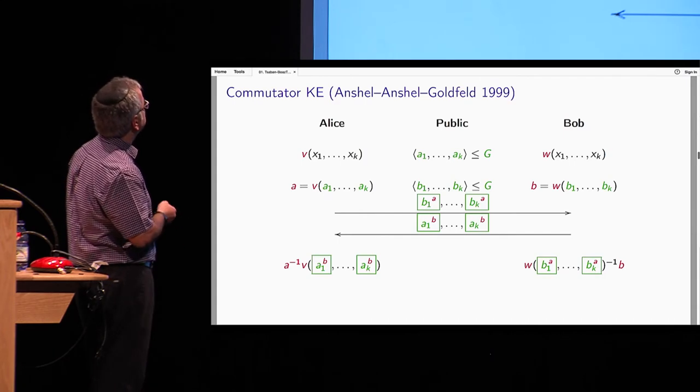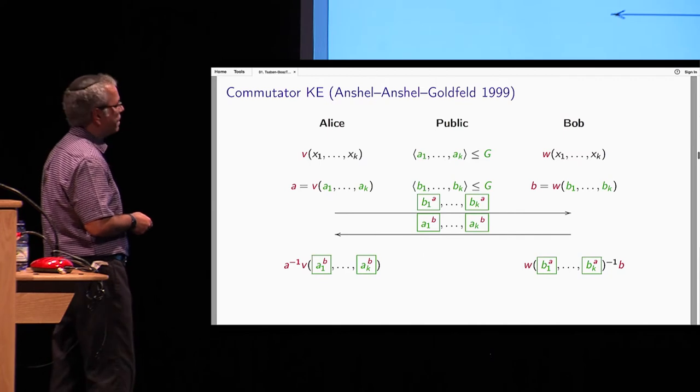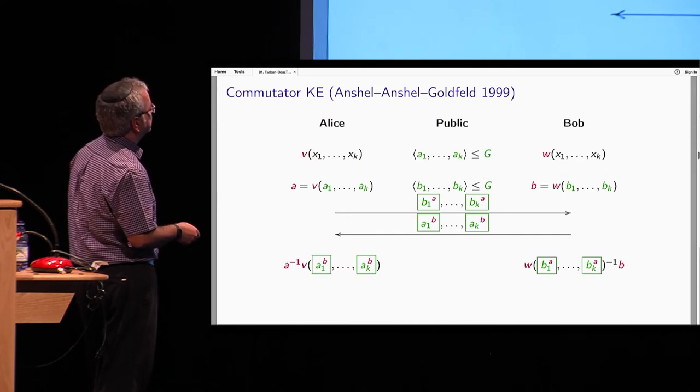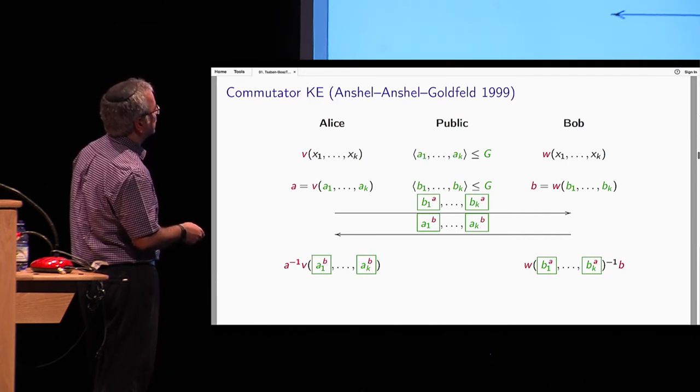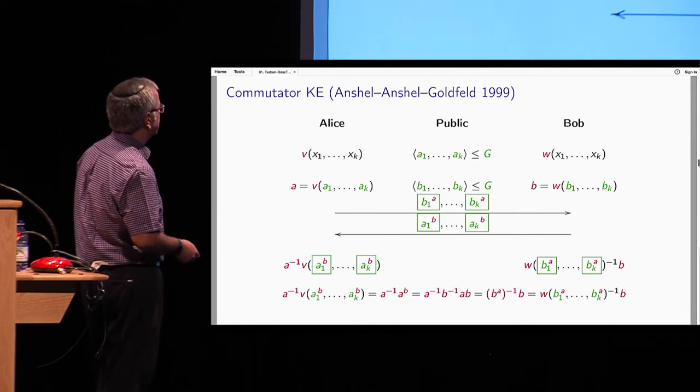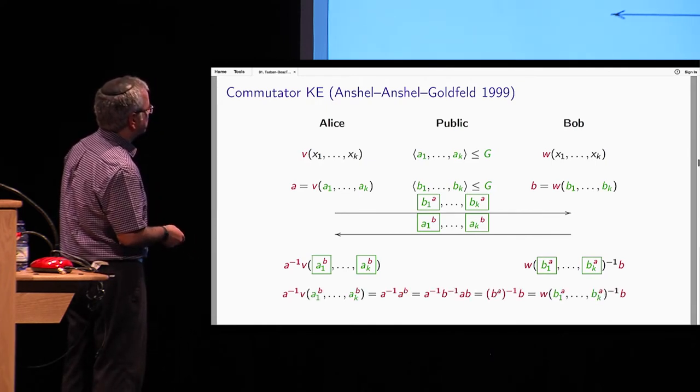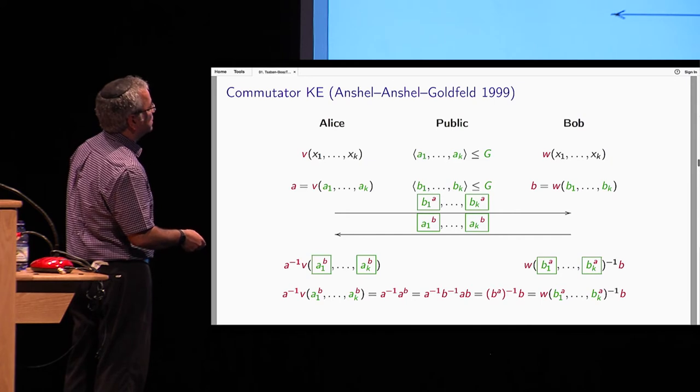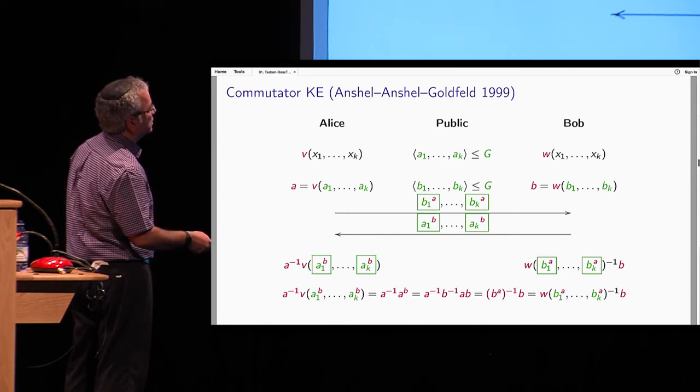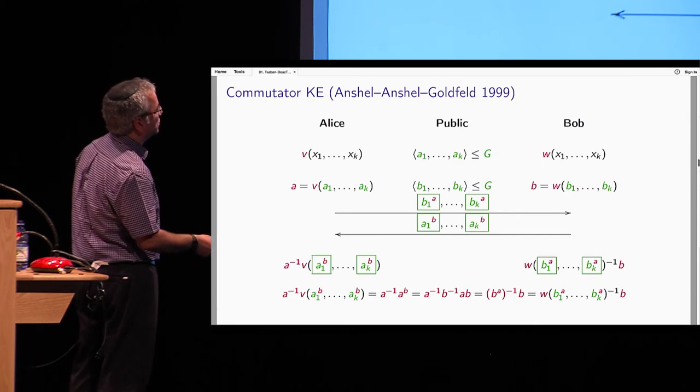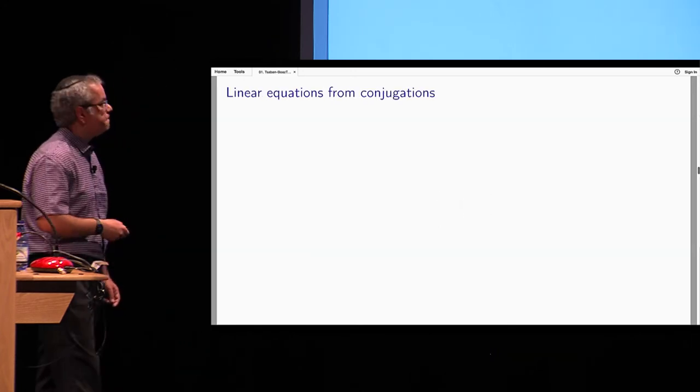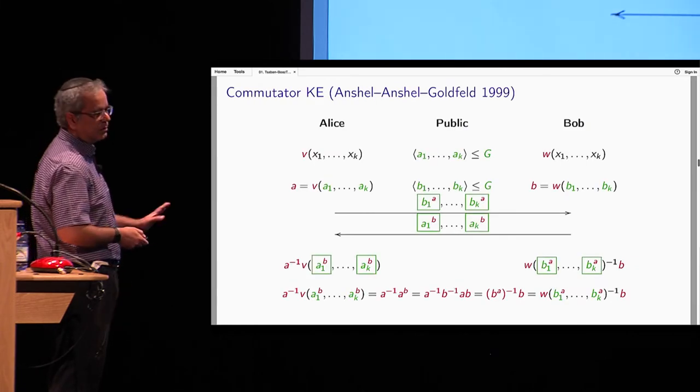The result of the conjugation is sent. You can see the result of the computation. You don't see what is a. And similarly, Bob sends the conjugates of these elements. So this is it. How do they compute the shared key? And why is it called the commutator key exchange? So Alice knows a, and she knows the secret word v. So she can plug in these elements because they are public in the air. Now we already said that you can take the b outside. You can take the conjugator outside. When you look at this, you take the conjugator outside, you get v of this, which is just a. So you get a inverse a to the b. You can write it explicitly. This is a to the b. And then you can similarly express it in a way that Bob can compute. And the shared key is the commutator of a and b. This is called the commutator.